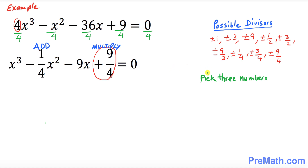The next step is to pick three numbers among these possible divisors. If you add them up it should give you negative 1 over 4, and if you multiply them it should give you 9 over 4. It will be really hard to just pick three numbers, so let me show you the easy way again. Negative 1 over 4 can be written as 0 minus 1 over 4.